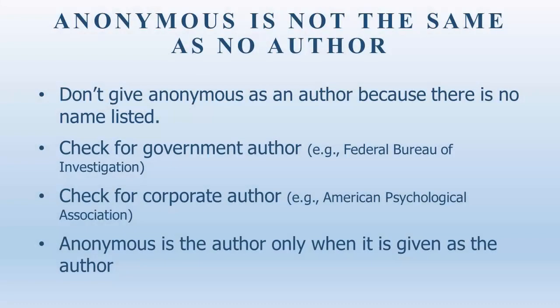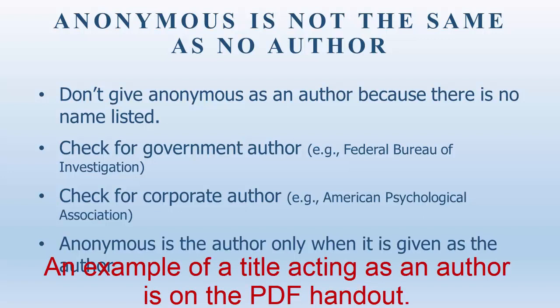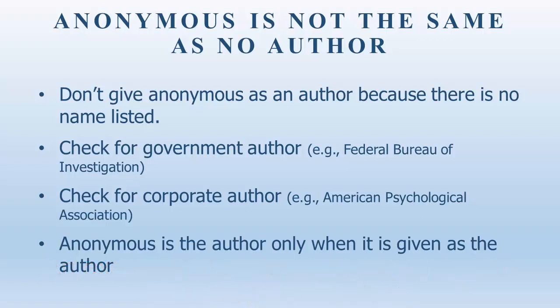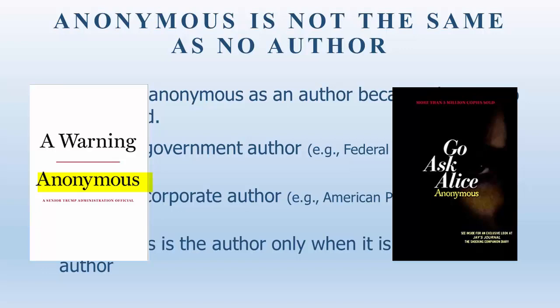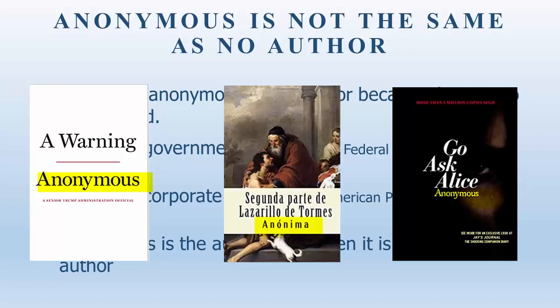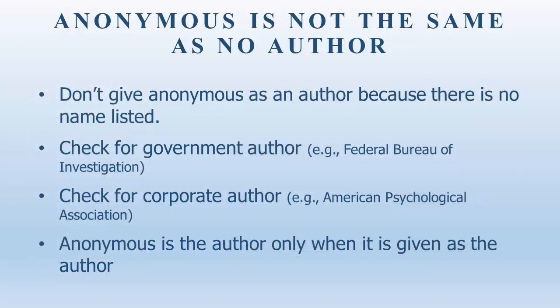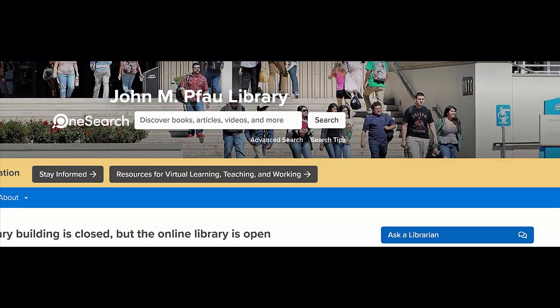A quick word on Anonymous as an author. Anonymous is not the same thing as no authors. Some items have no author, in which case you will use the title of the item as the author. But a government author, such as the FBI, is an author, and a corporate author, such as the American Psychological Association, is also an author. Anonymous is used only when it is listed as the author. If you have questions about an item's authorship, please consult a reference librarian, either in person or through the Ask a Librarian button on the Pfau Library's homepage.